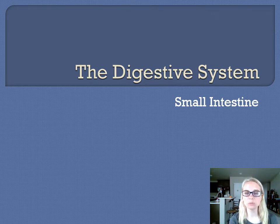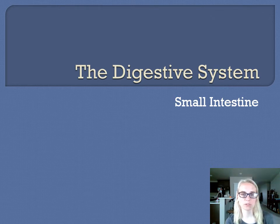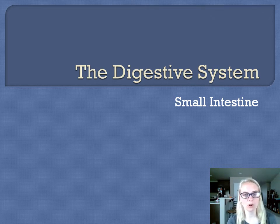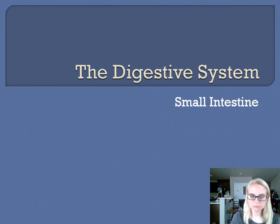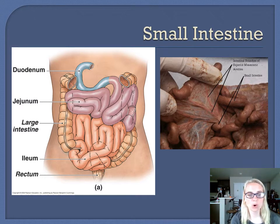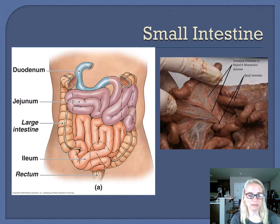About 90% of all nutrient absorption takes place in the small intestine, with a little bit of some nutrients coming in at the end of the small intestine like the ileum towards the large intestine, but the bulk of our nutrients are going to be absorbed here in the small intestine. The duodenum is shown in blue, jejunum in purple, and ileum in orange.